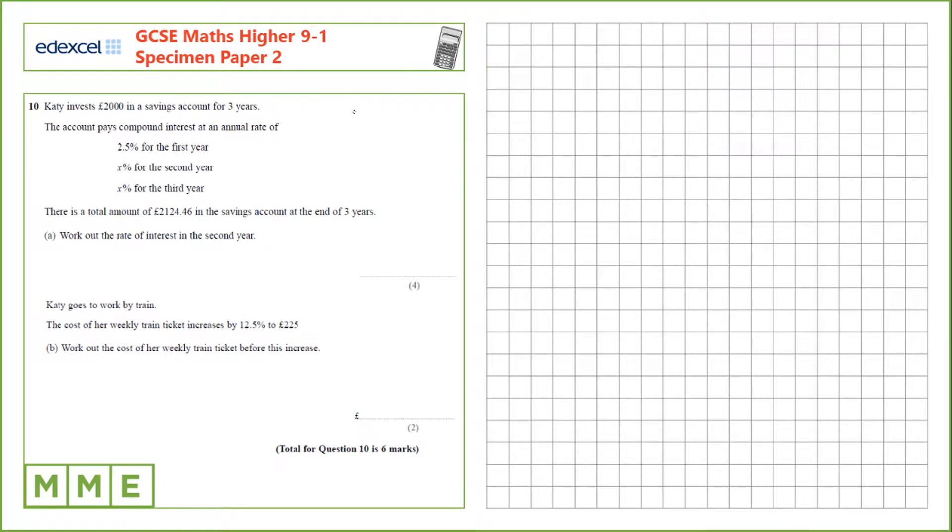Question 10. Katie invests £2,000 in a savings account for three years. The account pays compound interest at an annual rate of 2.5% for the first year and then x% for the second and third years. There is a total amount of £2,124.46 in the savings account at the end of the three years. We need to work out the rate of interest in the second year.